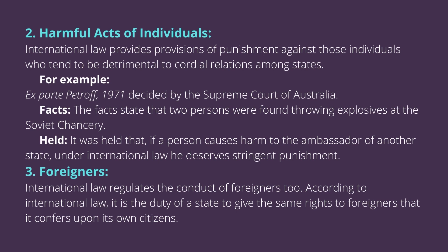Second, harmful acts of individuals: international law provides provisions of punishment against those individuals who tend to be detrimental to cordial relations among states. For example, Ex-parte Petrov, 1971, decided by the Supreme Court of Australia. Two persons were found throwing explosives at the Soviet chancery. It was held that if a person causes harm to the ambassador of another state, under international law he deserves stringent punishment.